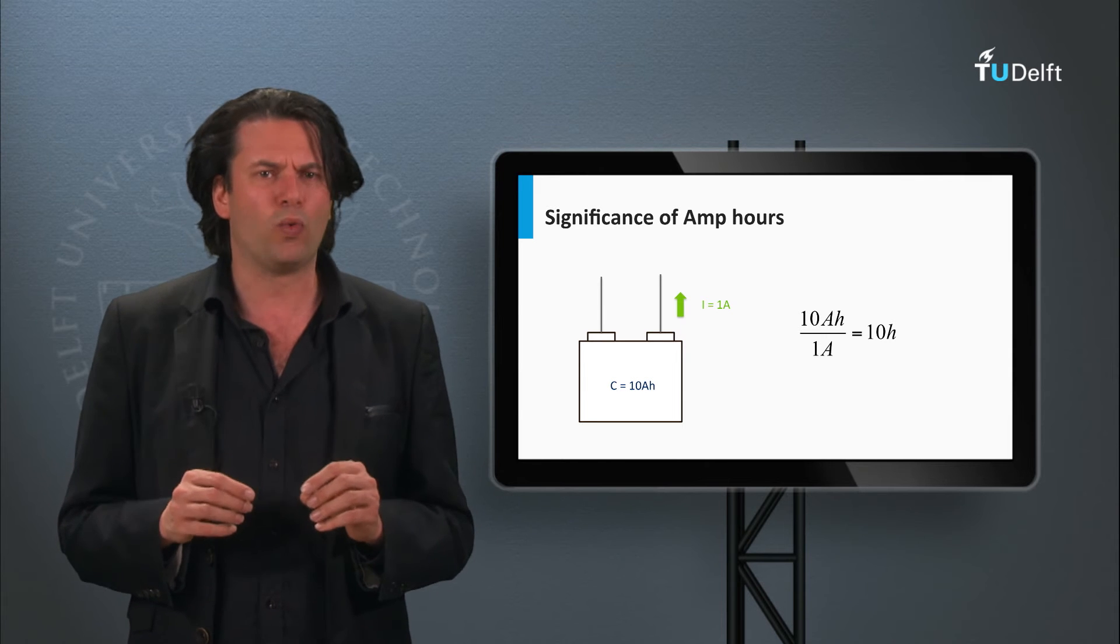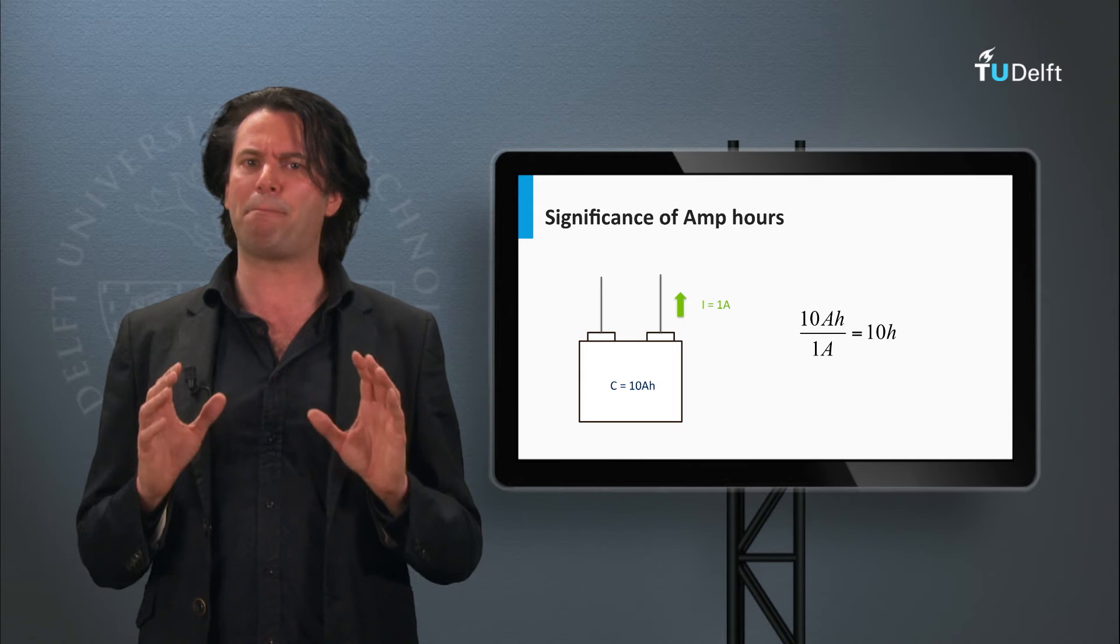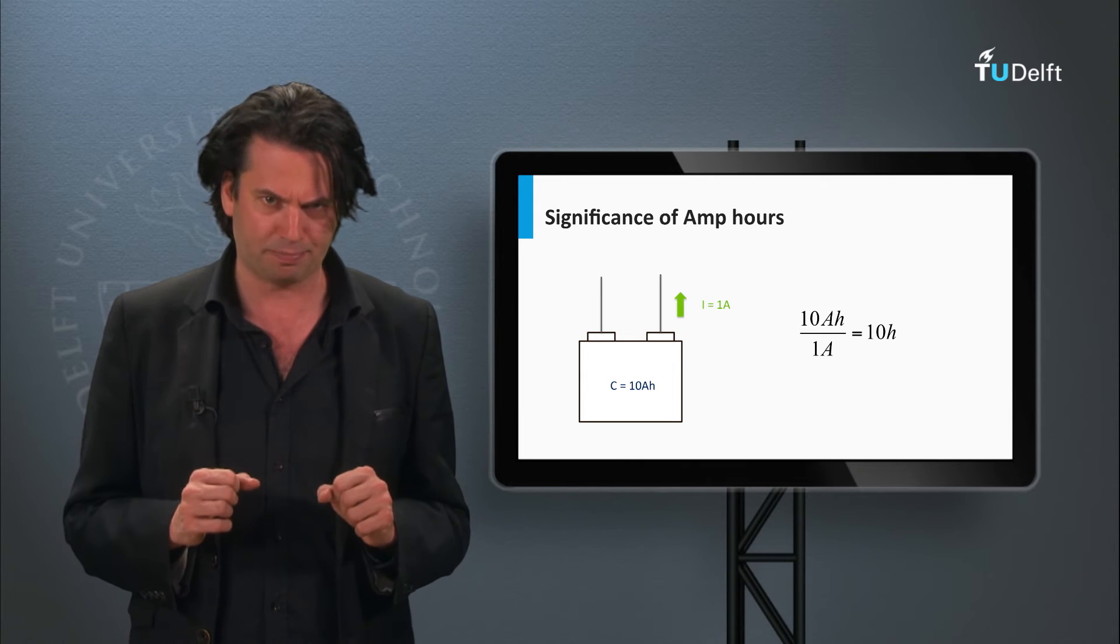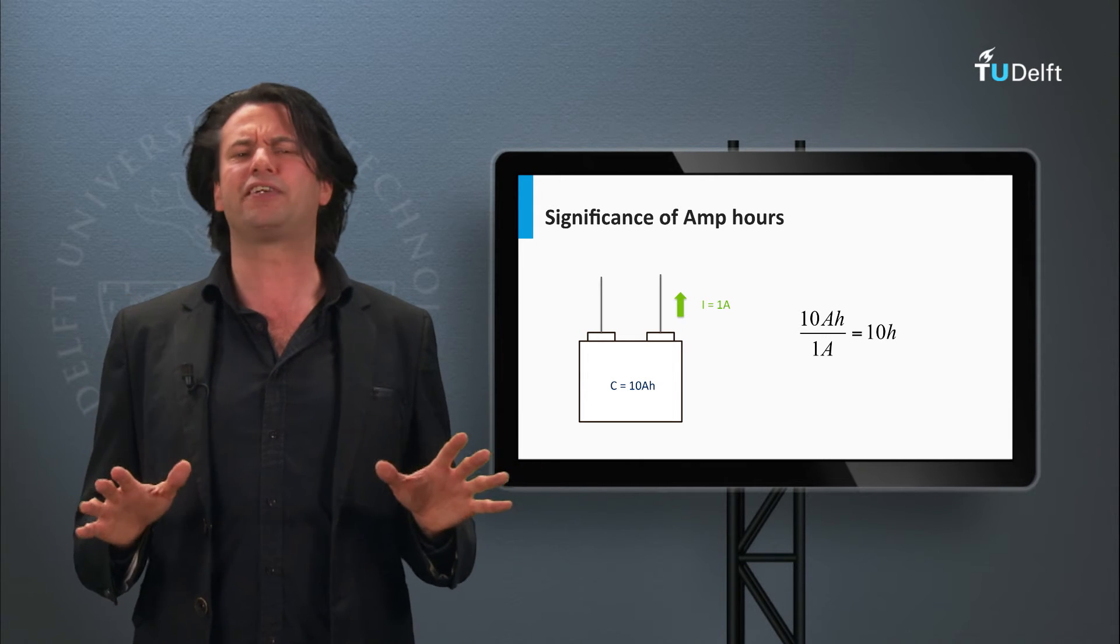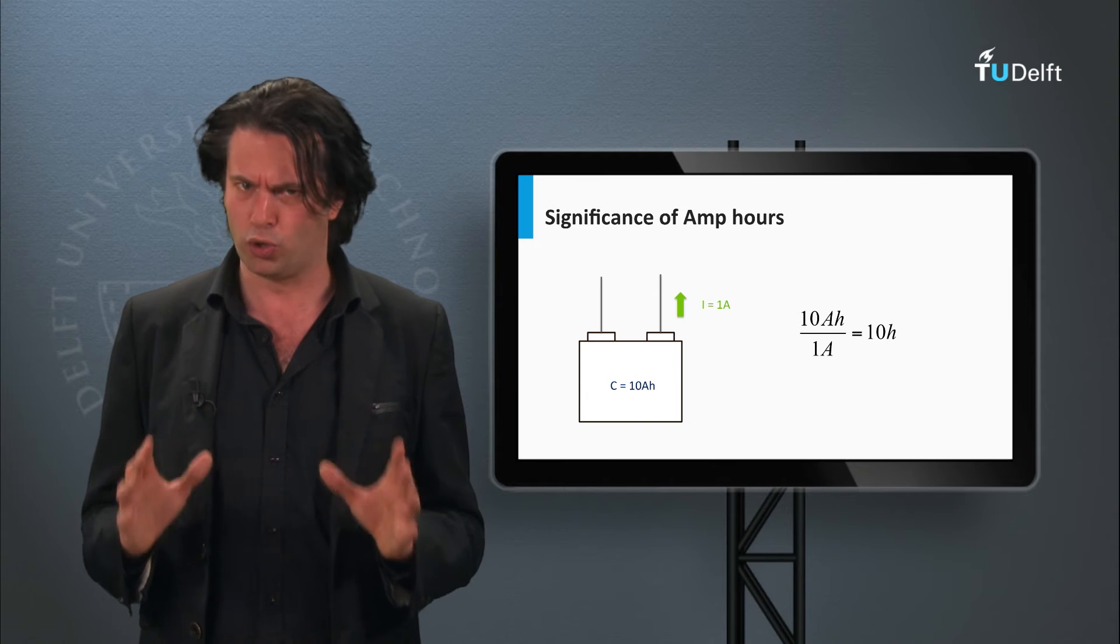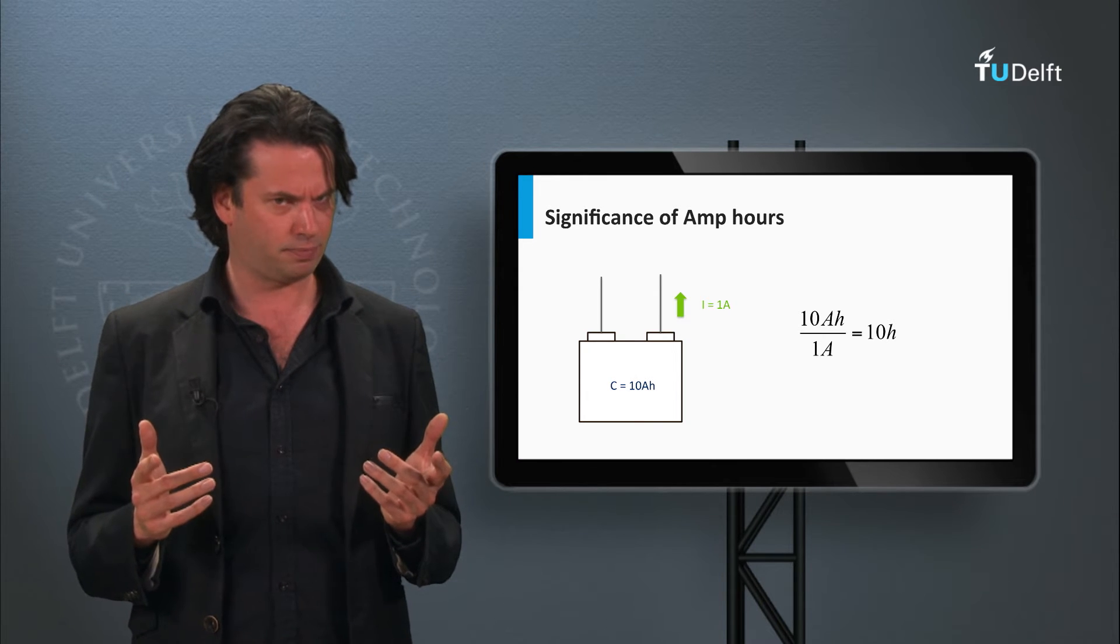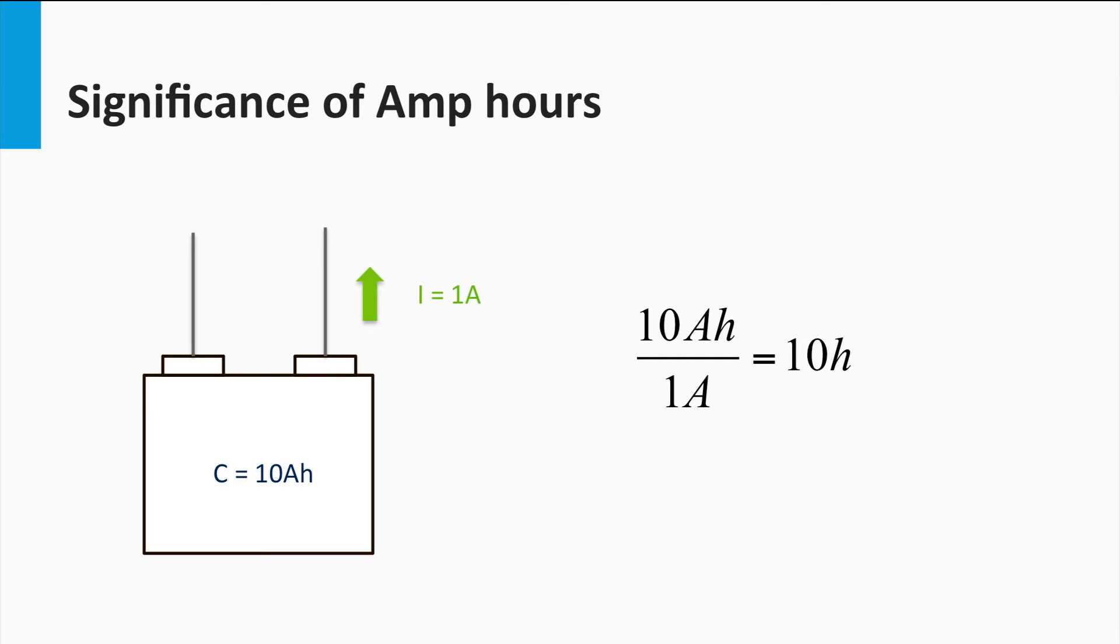You must be wondering what is the significance of amp-hours as the unit of battery capacity. The unit itself gives us some important clues about the battery properties. If we take a brand new battery with a 10 amp-hour capacity, it can theoretically deliver a 1 amp current for 10 hours at room temperature. Of course, in practice this is seldom the case due to several factors, as we will see later.